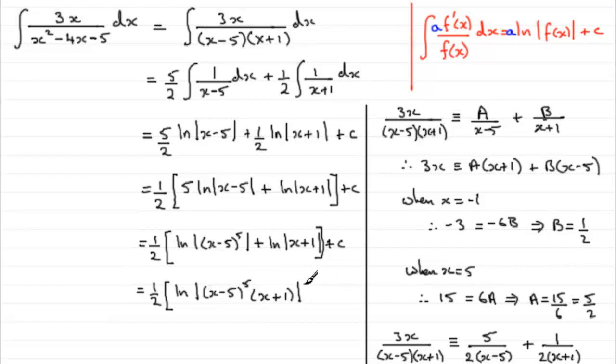Now we have natural log plus natural log, so we can use the multiplication rule. And that gives us the natural log of the mod of x minus 5 to the power 5 times x plus 1. And we'll put a mod around that, close the bracket off, and put plus c. And basically, that's it, the simplified version of your integral.